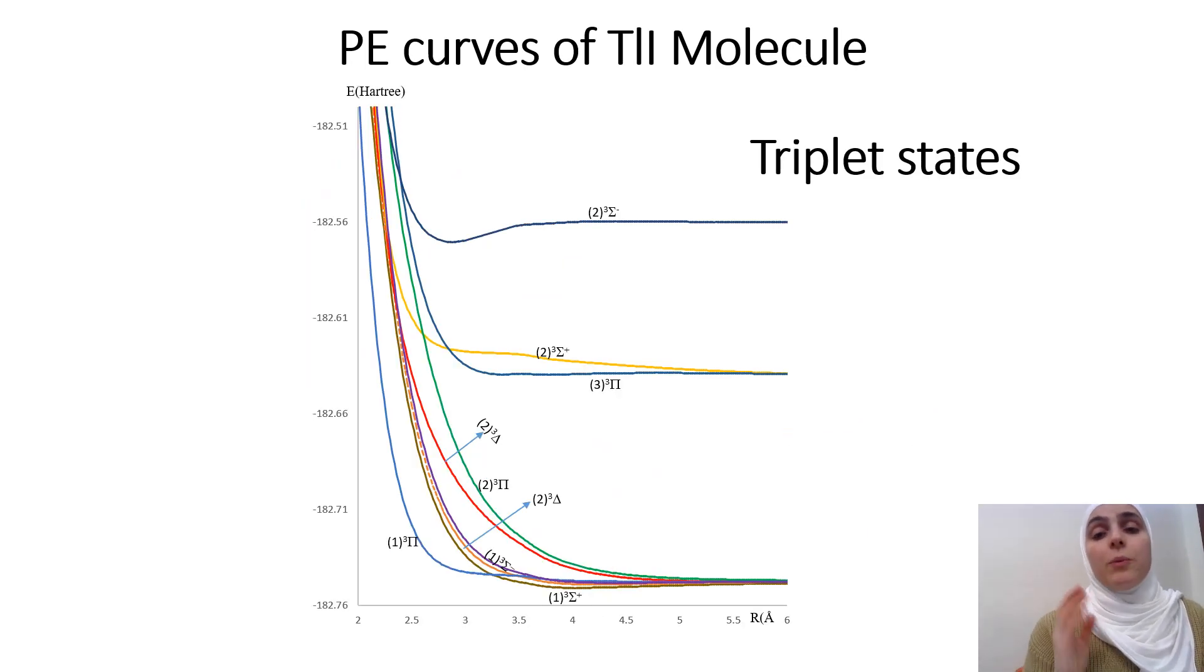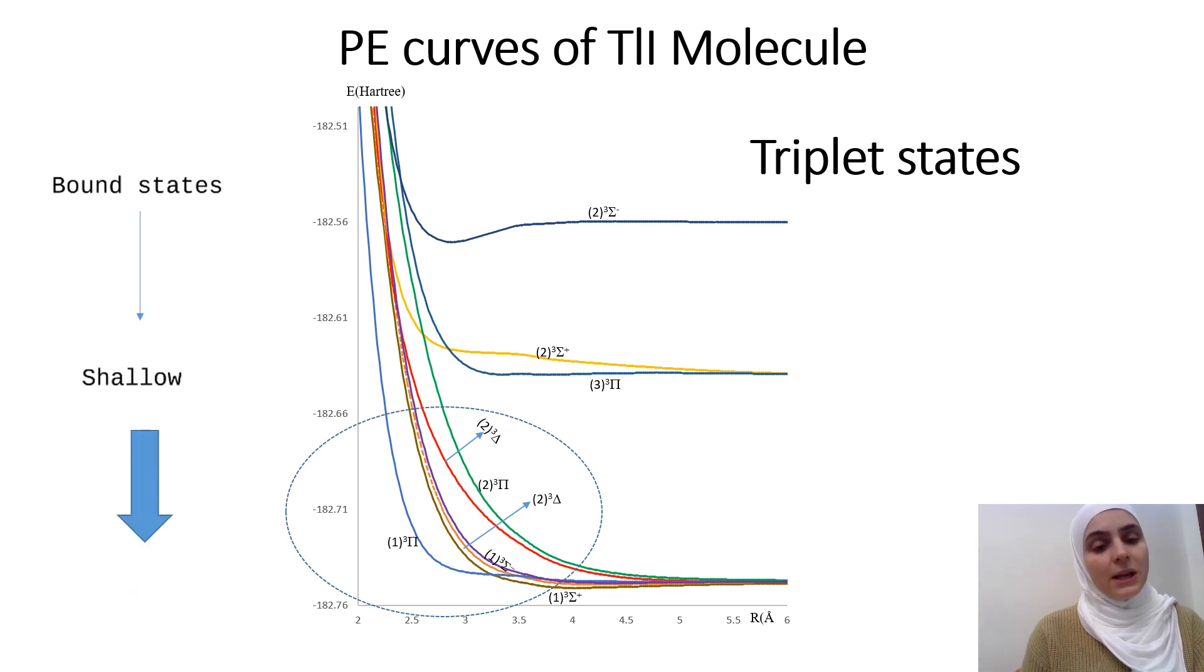Same as we go to the potential energy curves of the TLI molecule but here with the triplet multiplicity of TLI, also it includes sigma pi and delta states. Also here we can tell that all the states are bound shallow states and this means that the repulsive forces are dominant in our molecule.